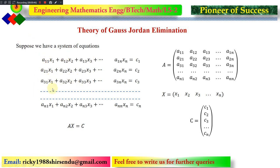There are N number of equations and N number of variables starting from x1, x2, x3 up to xN. We represent this system in the form Ax = C, where A is the coefficient matrix bearing all the coefficients: A11, A12 up to A1N, with other rows carrying A21, A22, A23 and so on.